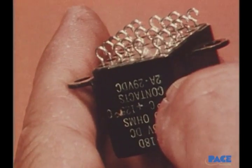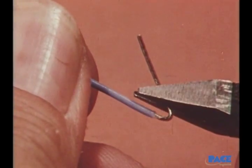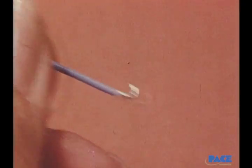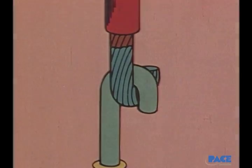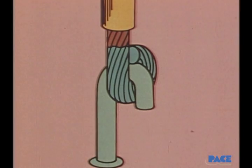Another type of terminal is the hook terminal, often found on hermetically sealed relays. The wire wrap should be at least 90 degrees. This one is 180 degrees. For repair work, a 270 degree wrap is recommended.